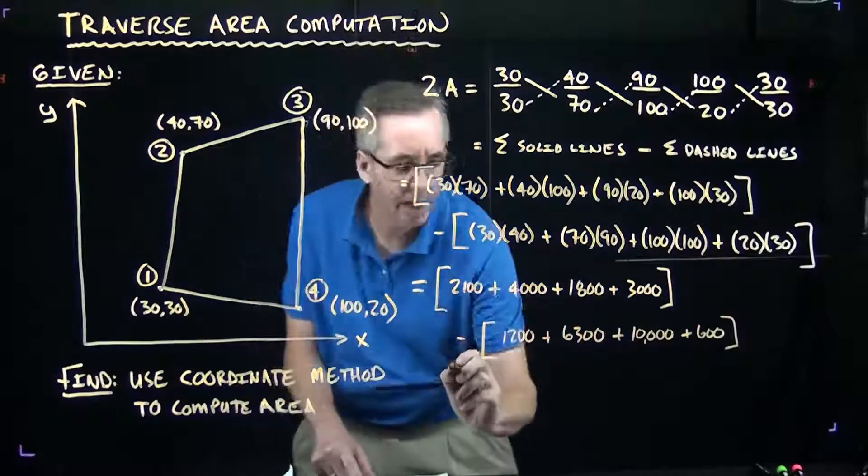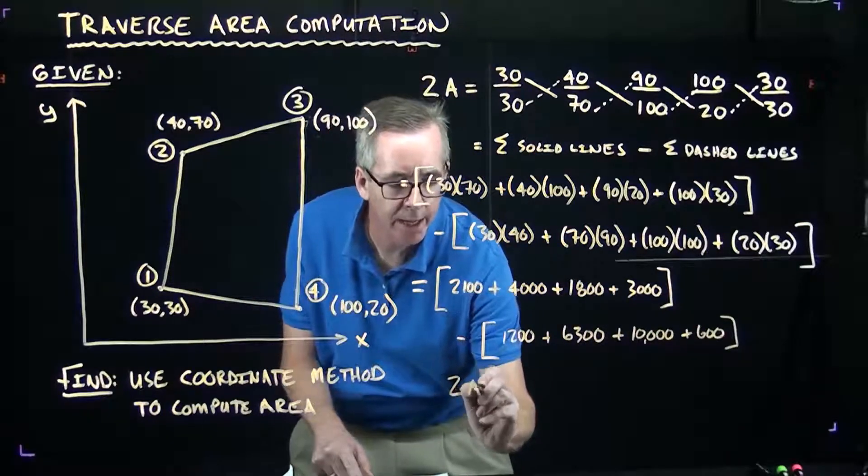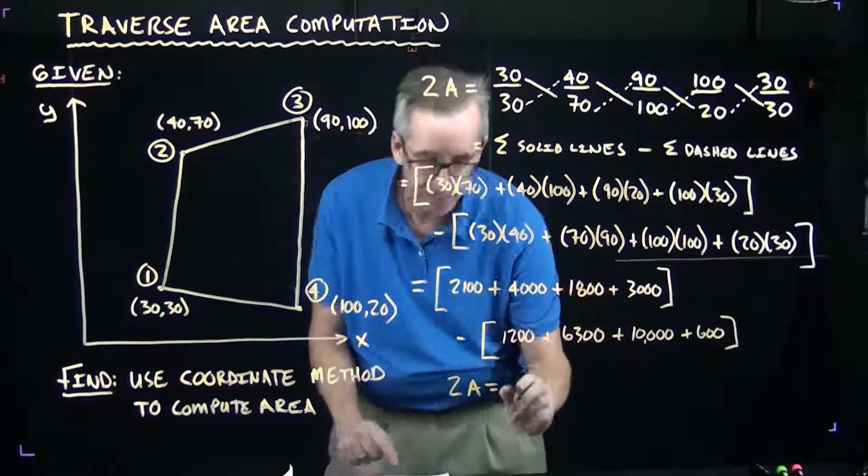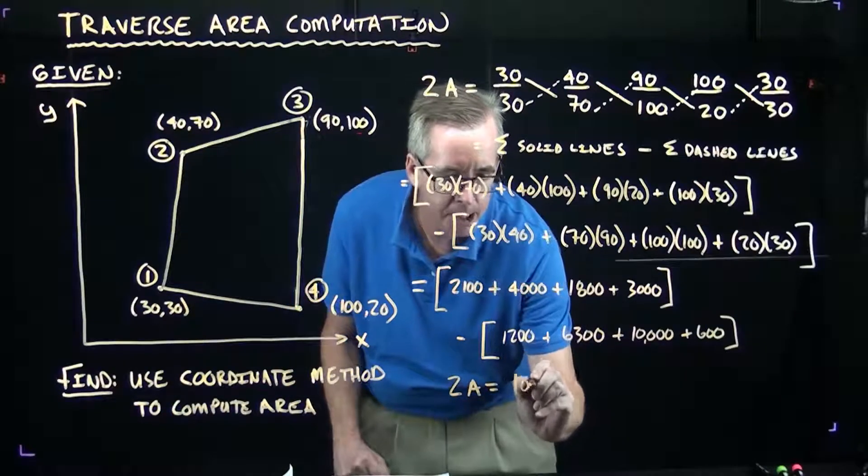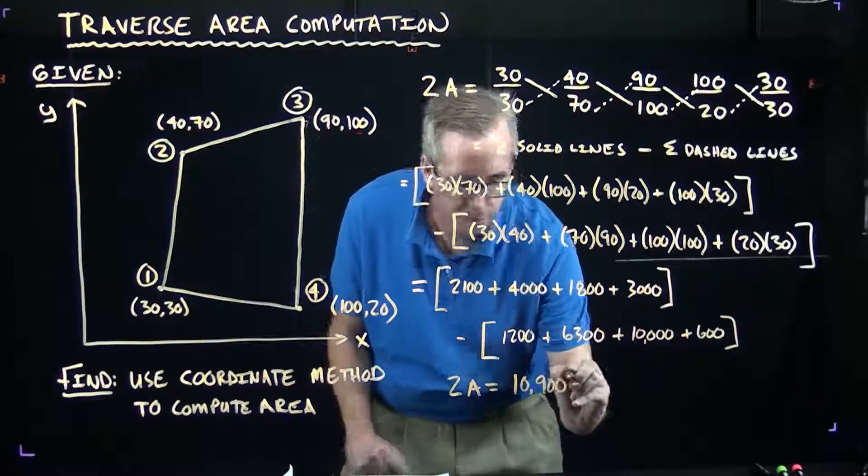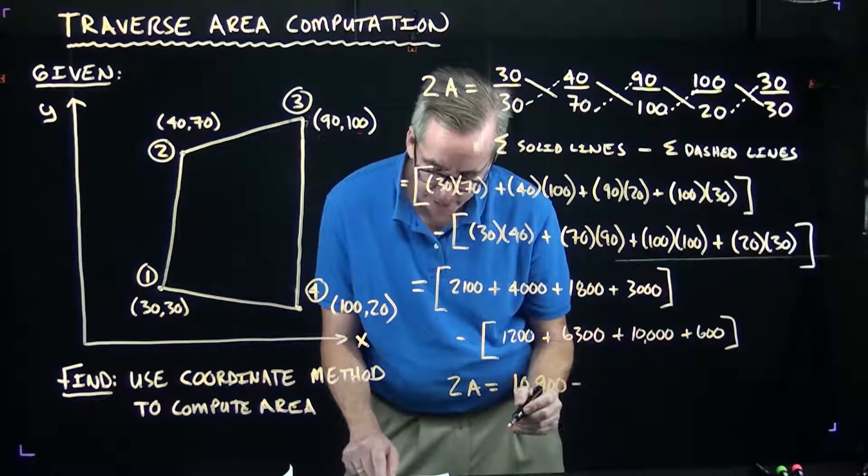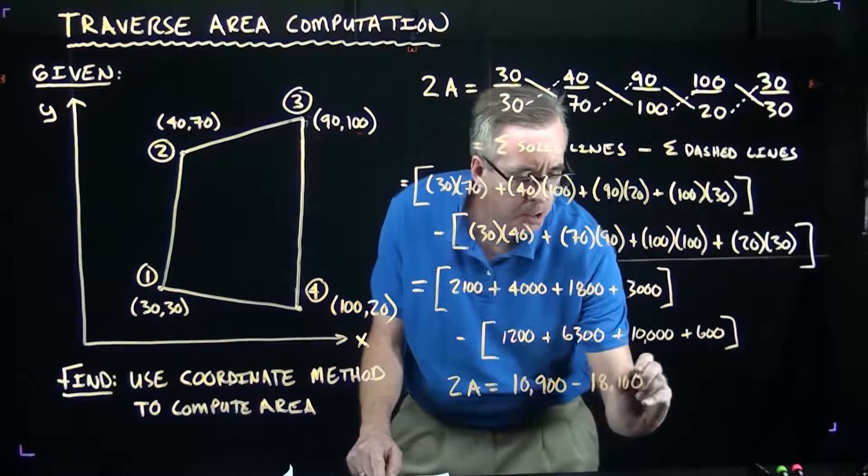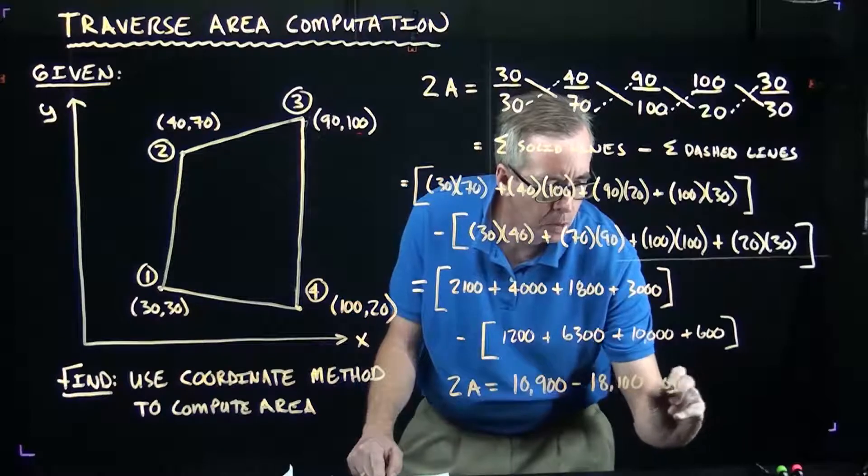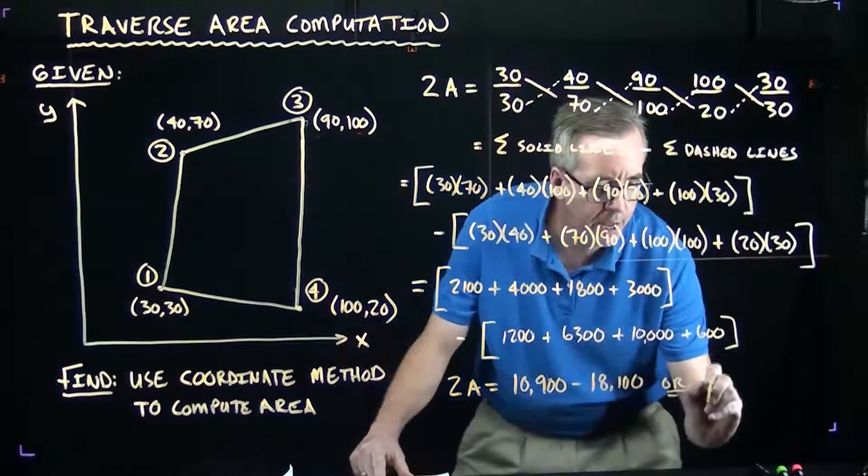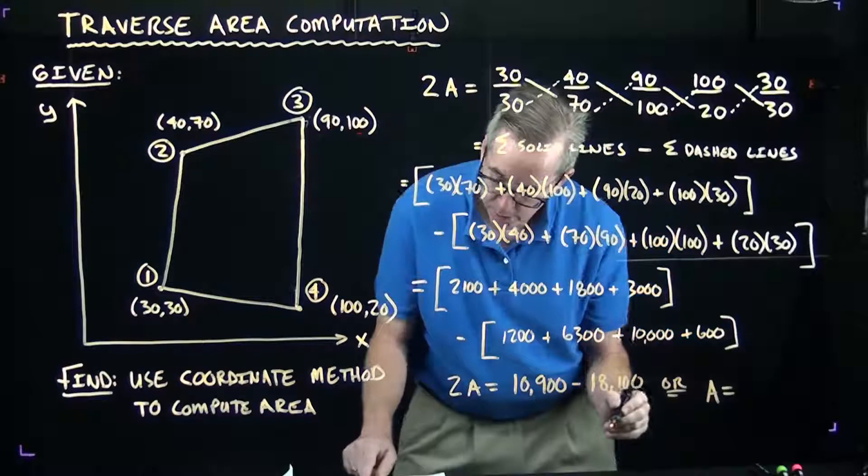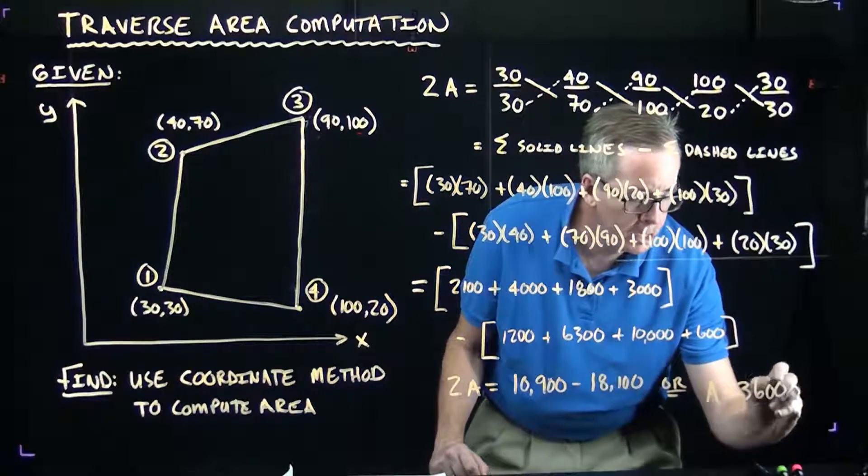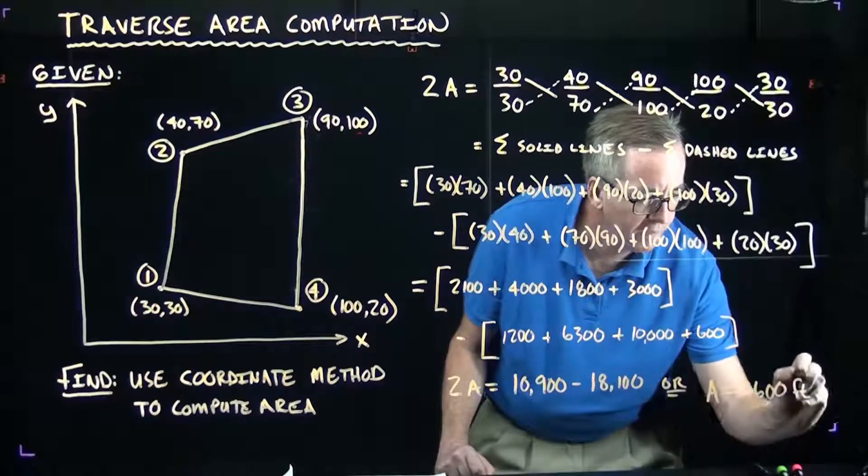When I sum this up, I get 2A is equal to, all the solid lines come out to be 10,900. All the dashed lines come out to be 18,100. Or, we end up with A is equal to 3600. Now, in this case, it would be square feet.